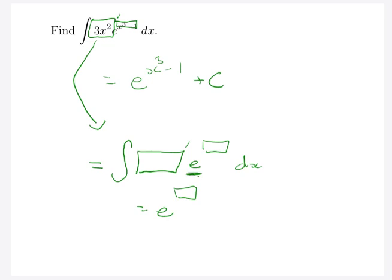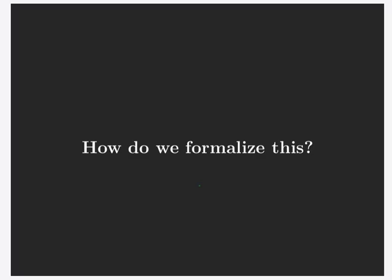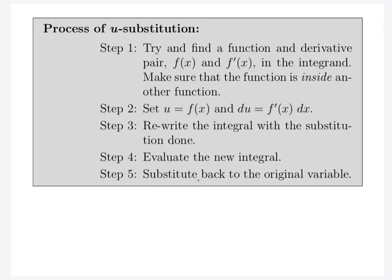The nice thing about this example is that our main function e, when we undo the derivative of the outside part, doesn't really change. What we want to do now is formalize this — come up with a standard version that works with any function, not just the nice one with e. So this is called u-substitution. We're looking for a pair: a function and its derivative inside our integral. The function f of x has to be inside something else. Our variable is u, so instead of a box we put u, and instead of box prime we put du. We call u our inside function.